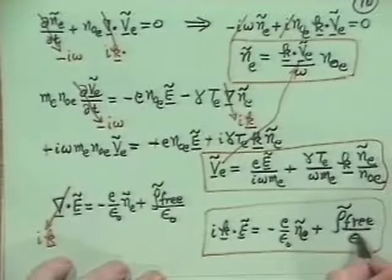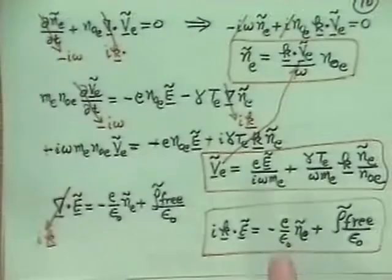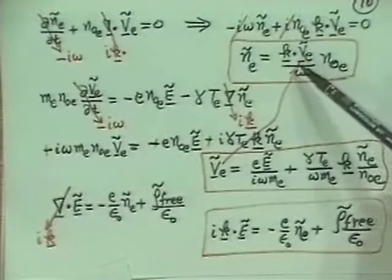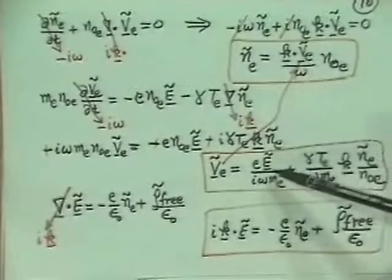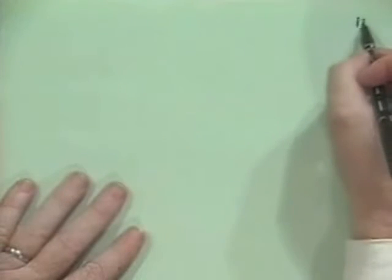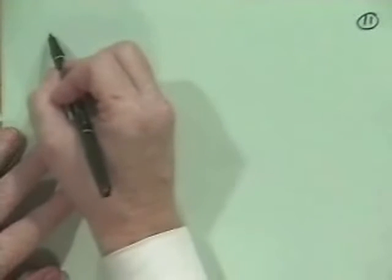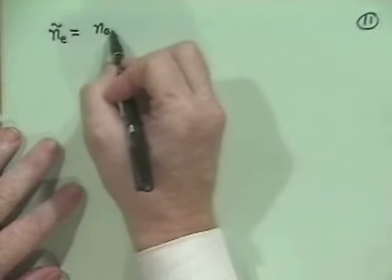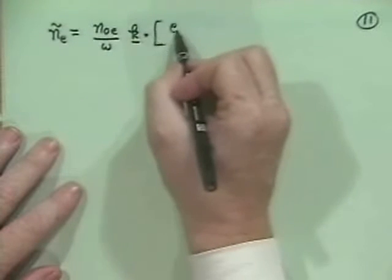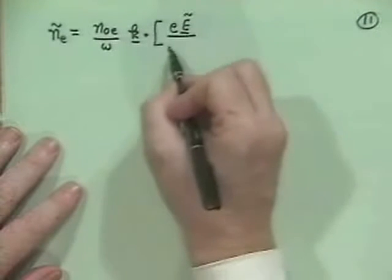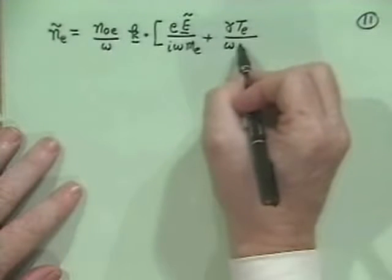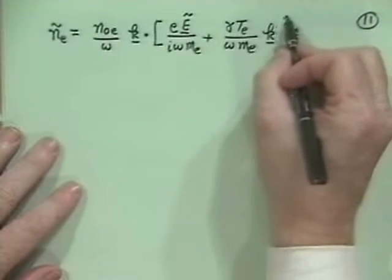Now we go about combining these things. The compressibility — the non-zero divergence of the velocity — is coming about because of either an electric field or a thermal effect. Putting those two together, we get Ñ_E is equal to N₀_E over omega, and then K dot V. But that becomes K dot E electric field, writing out the flow velocity: divided by iω M_E, plus γT_E over ω M_E times K vector Ñ_E over N₀_E.